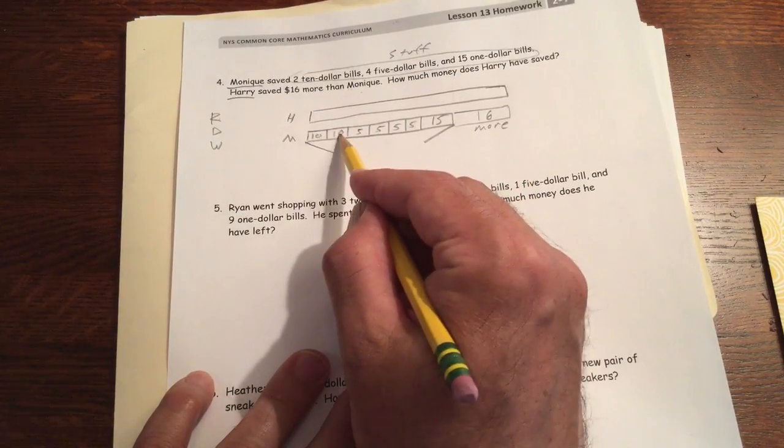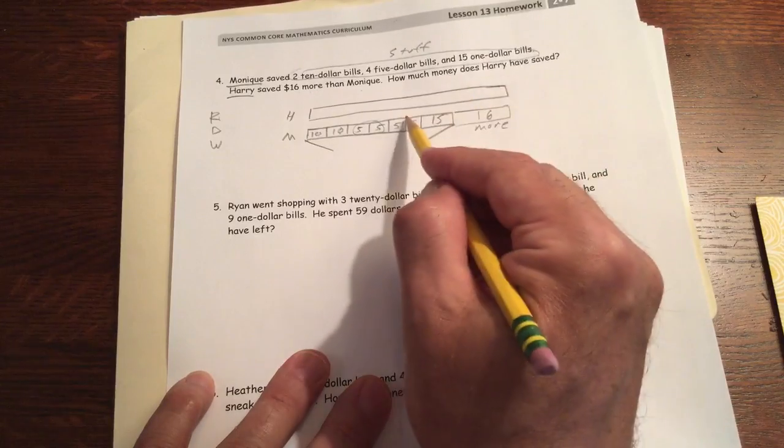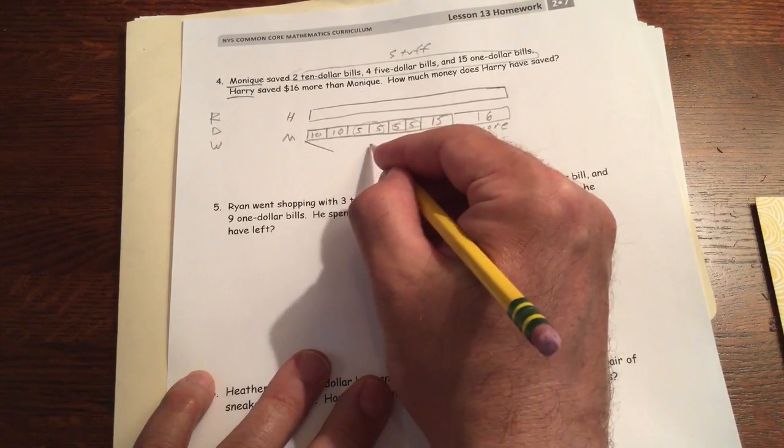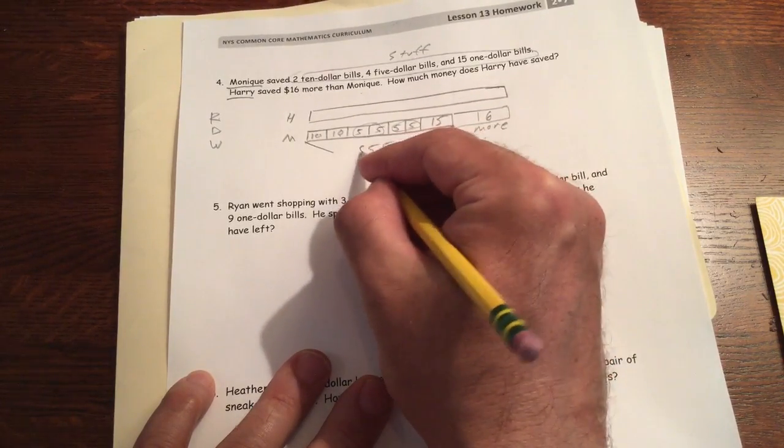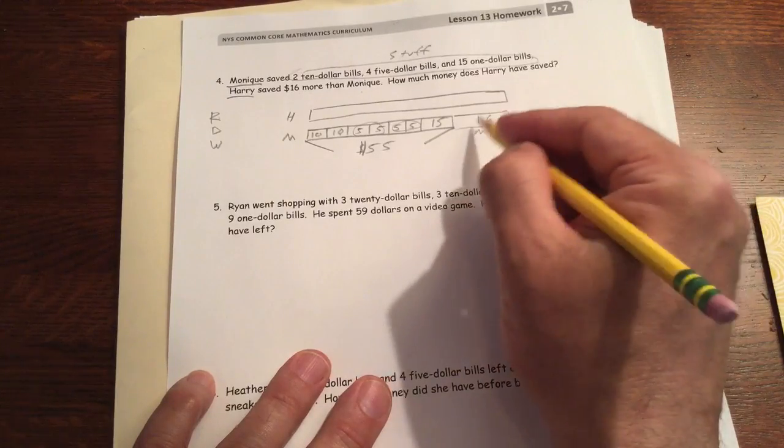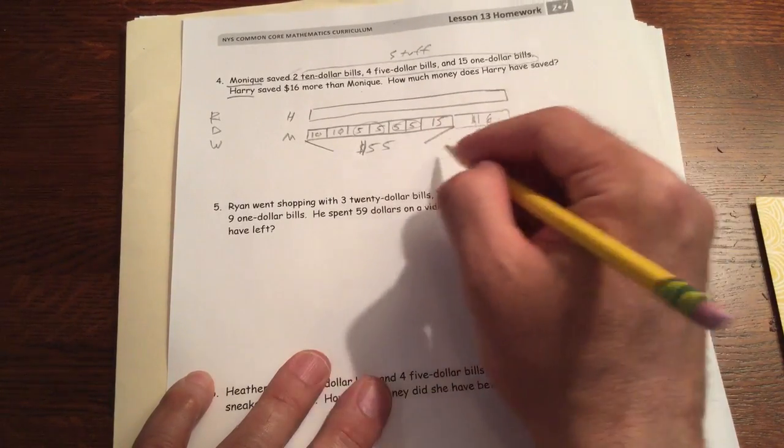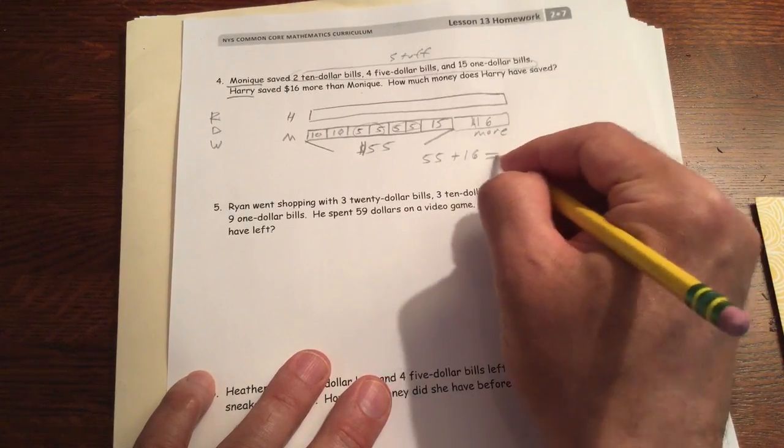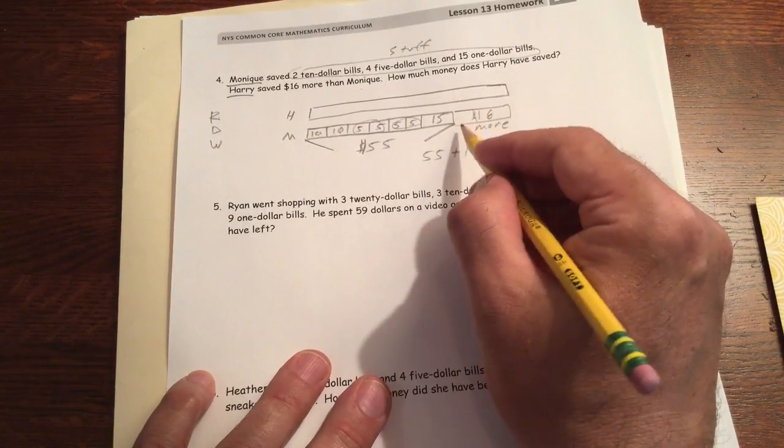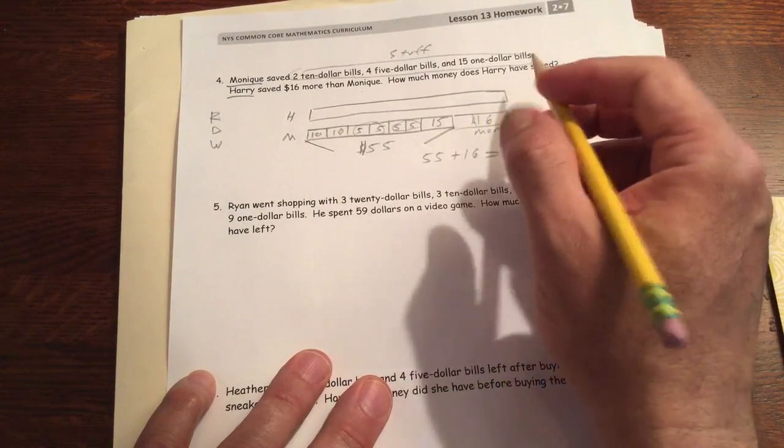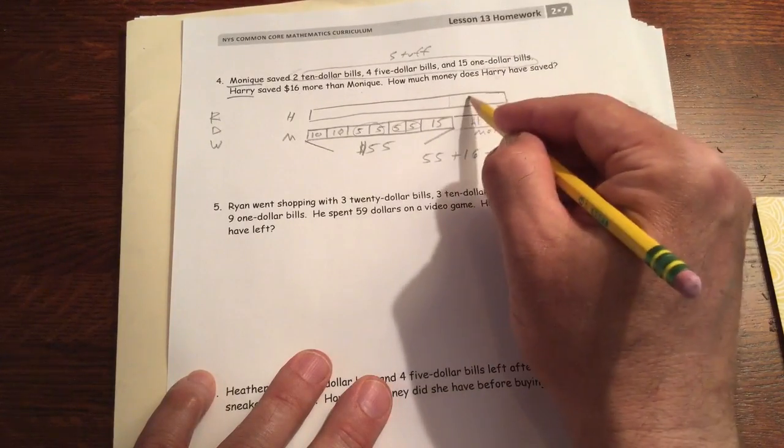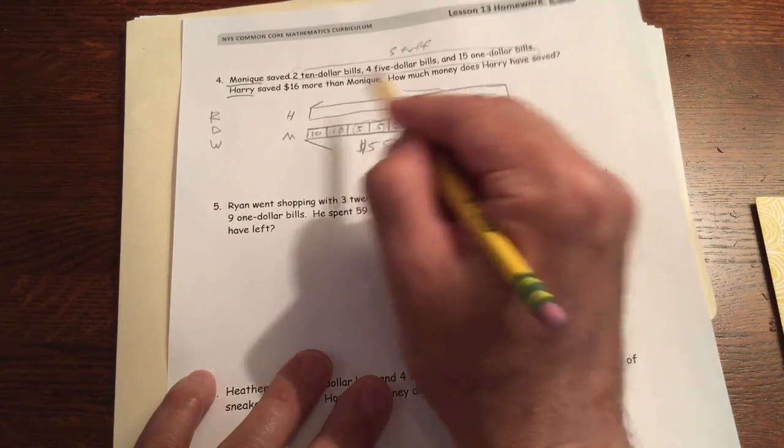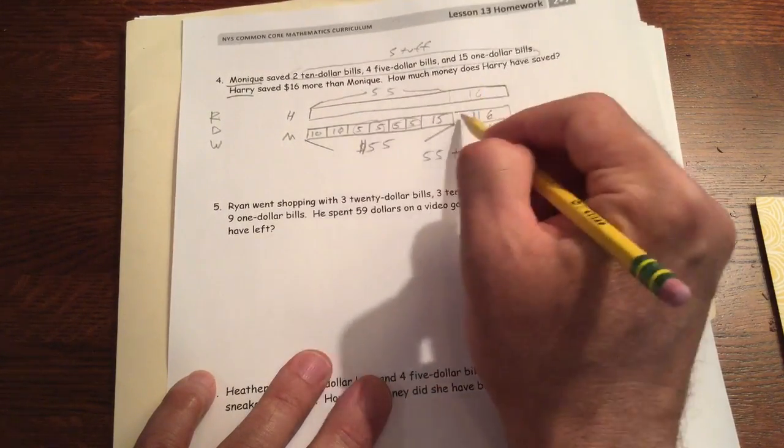So let's see. This is $10, $20, $30, $40. $40 and $15 is $55. And these are all dollars, right? $55. And that's $16 more. So I have to figure out 55 plus 16 is going to equal this much plus the 16 more. Or you can also think of it as this is the 16 more. Right? 55. That's 55. Just like Monique's 55. And that's the 16 more.